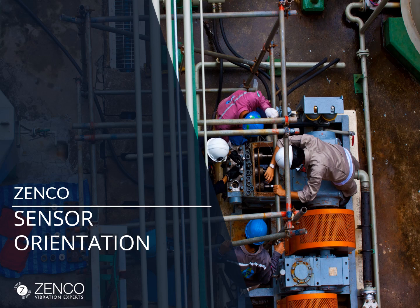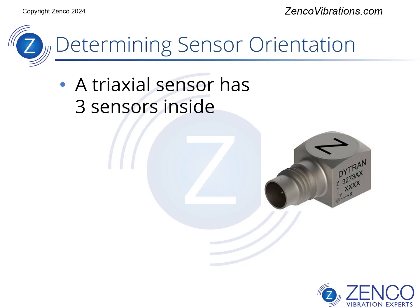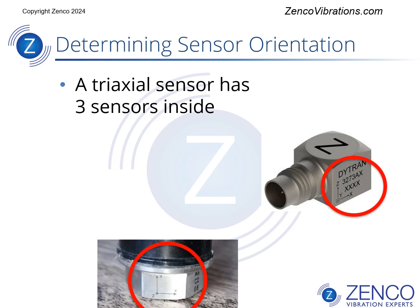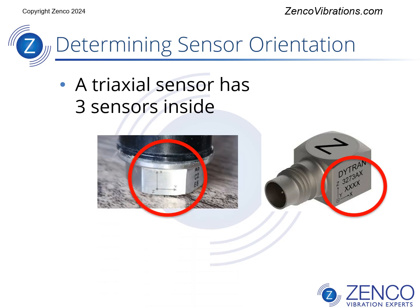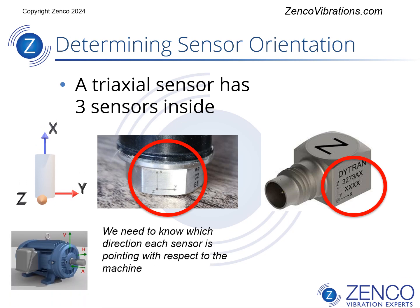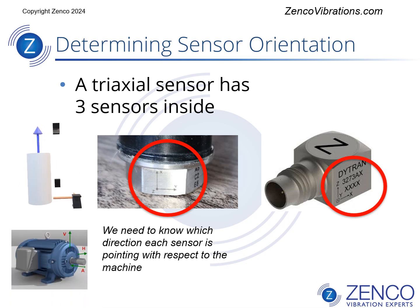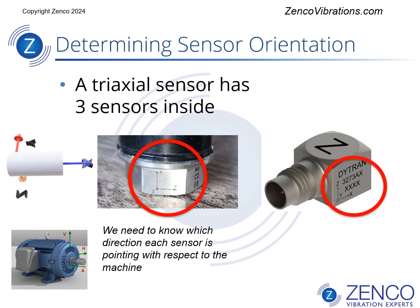This is going to be a short presentation on defining sensor orientations for vibration sensors. This is a tri-axial accelerometer. It has three sensors inside — in this case they are labeled X, Y, and Z. We need to know, relative to our machine, which direction each of these sensors is pointing.